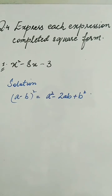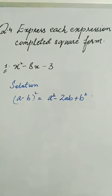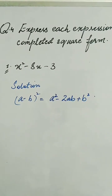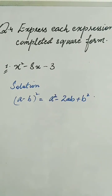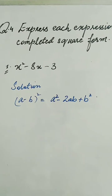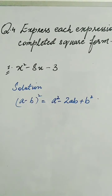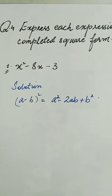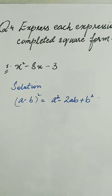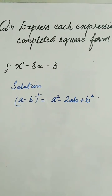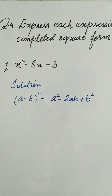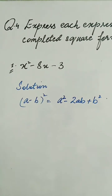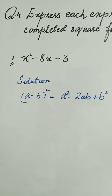Hello and welcome. In this video, we are going to learn how we can change a quadratic expression into a complete square form. In order to change a quadratic expression like the one given here into a complete square form, we use the formulas of whole square, which are a minus b whole square and a plus b whole square, according to the given question.